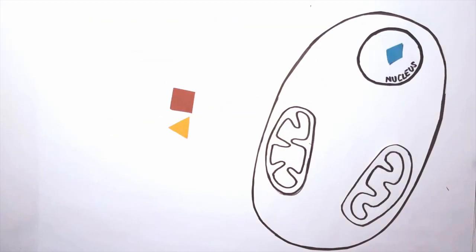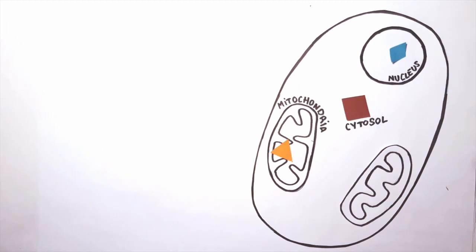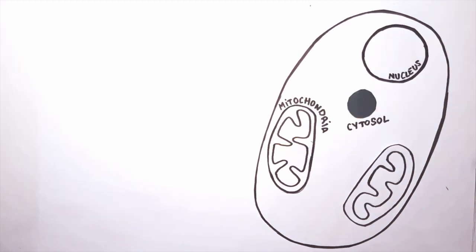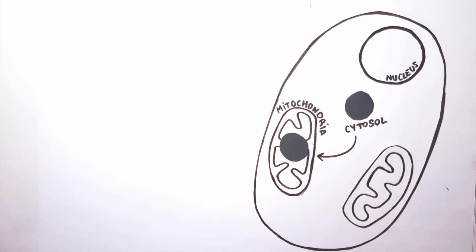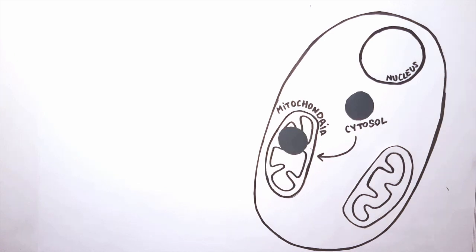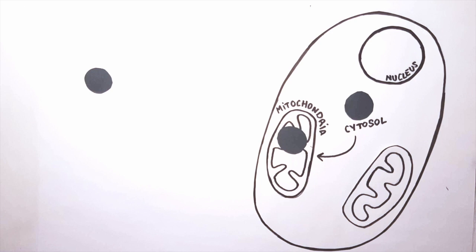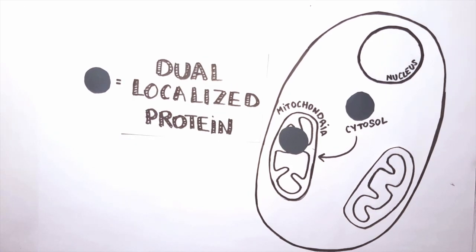The proteins within eukaryotic cells can have many different localizations. Some proteins can localize in the cytosol and also be targeted to the mitochondria. These proteins with different simultaneous localizations within the cell are called dual localized proteins.